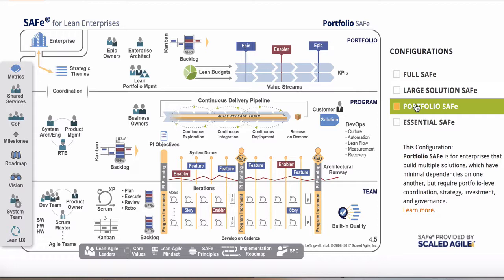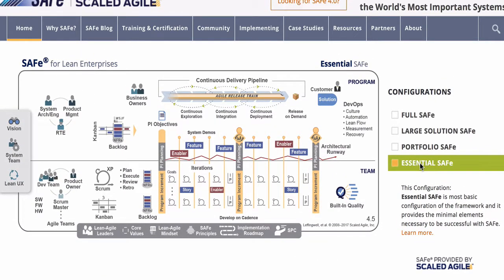Let's start with the smallest SAFe configuration: Essential SAFe, where the value stream can be implemented by one ART. This configuration is the recommended starting point and will satisfy the needs of most small to medium-sized companies that have only one value stream. If you're a long-time SAFe user, you might notice there is no portfolio layer in Essential SAFe — you don't have to have a portfolio. Think of a software company with four scrum teams working on one product. Since there is only one value stream, there's no need to coordinate a portfolio. Why add that overhead if it's not necessary?